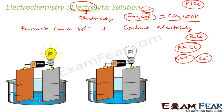For example, if we have NaCl in water and connect it to a battery in a circuit, you'll see that the bulb glows because Na⁺ and Cl⁻ ions conduct electricity. On the other hand, if you add sugar to water and create the same circuit, the bulb will not glow because there are no ions bridging the two plates.